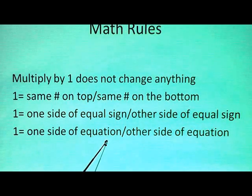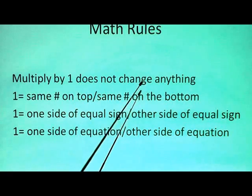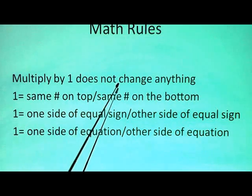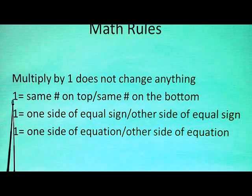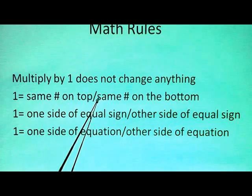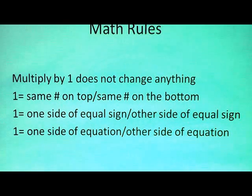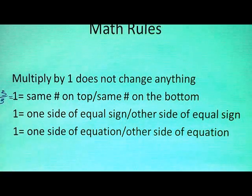Before we move further, let's review our math rules. When we do math, remember you can always multiply anything by one and not change anything. So you multiply ten by one and it's still ten; you multiply ninety-nine by one and it's still ninety-nine — you haven't changed anything. Interestingly, one is not always the number one. One can be expressed as a ratio: some number on top, and if it's the same number on the bottom, then it's still one — for example, three over three is still one.